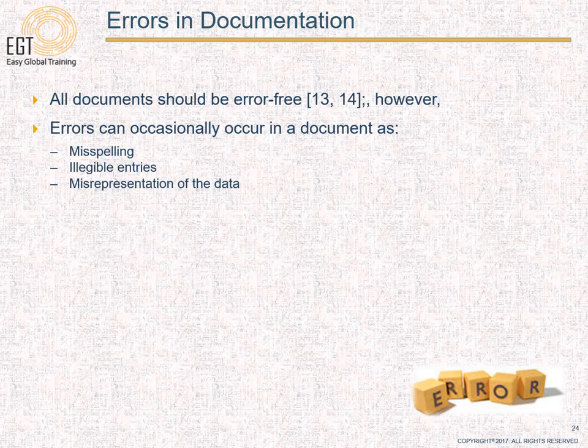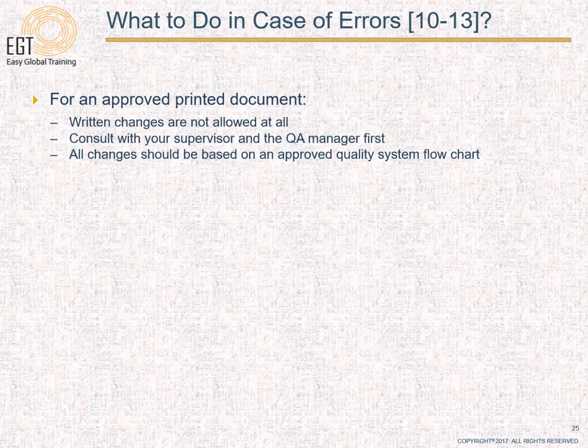Errors in documentation is an important topic. All documents should be error-free, but errors do happen. Errors can be in the form of misspelling, illegible entries, or misrepresentation of data. For an approved printed document, written changes are not allowed — you cannot simply cross out the error, write the correct thing, initial and date. Instead, consult your supervisor and QA manager and follow the proper course of action already mentioned in your SOPs, and correct the error based on the approved quality system flowchart.